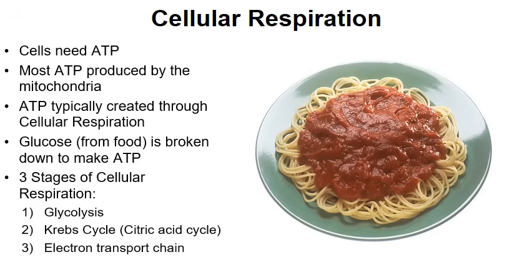That's what happens during cellular respiration. Glycolysis, the Krebs cycle, and the electron transport chain are all processes that break down molecules of glucose from our food to produce ATP. Let's move into glycolysis.